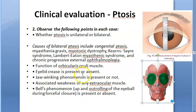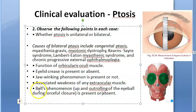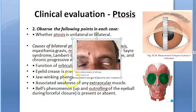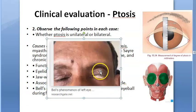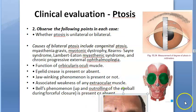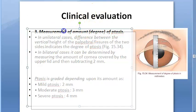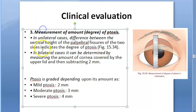Check for weakness of extraocular muscles such as the recti muscles. Also check for Bell's phenomenon — the up and out rolling of the eyeball during forceful eyelid closure. This is a defensive mechanism: when you forcefully close the eyelid, the eyeball rolls up and out. All of this must be assessed.